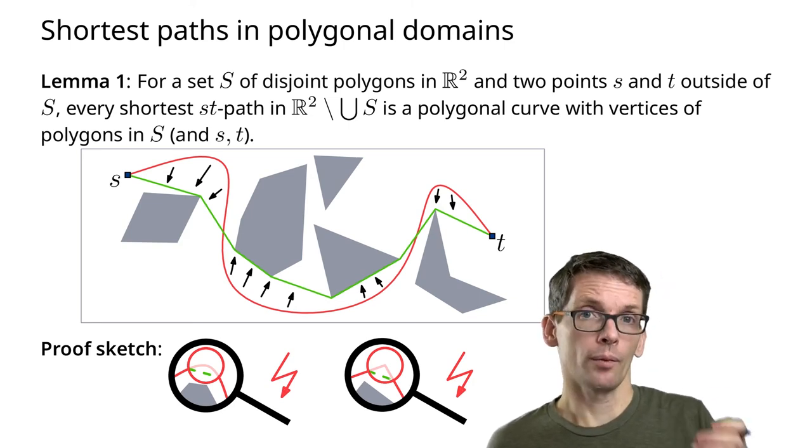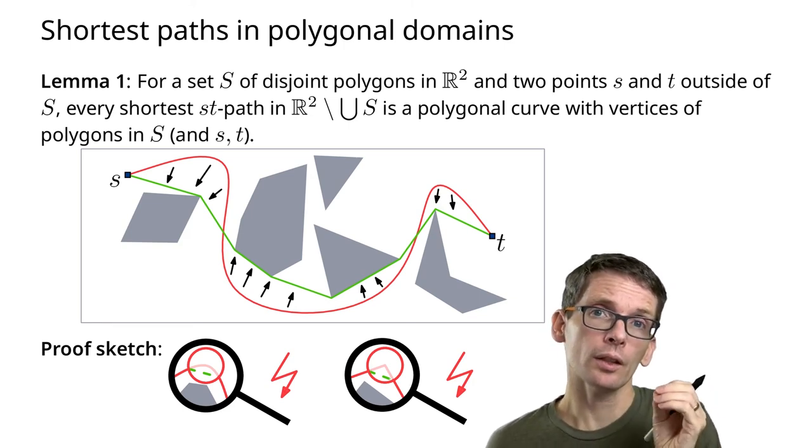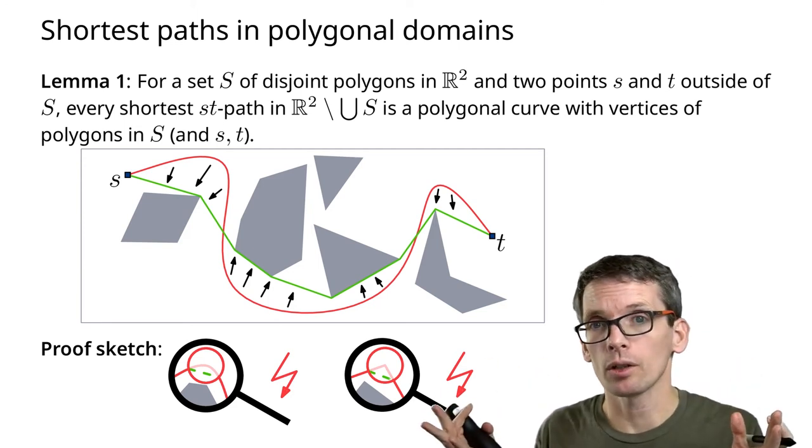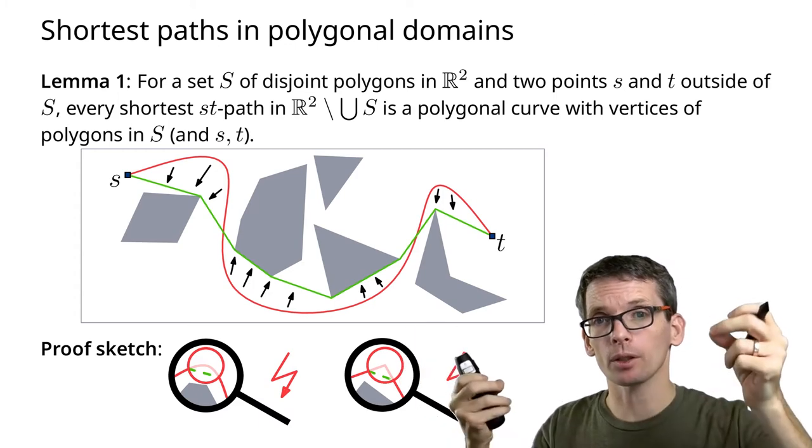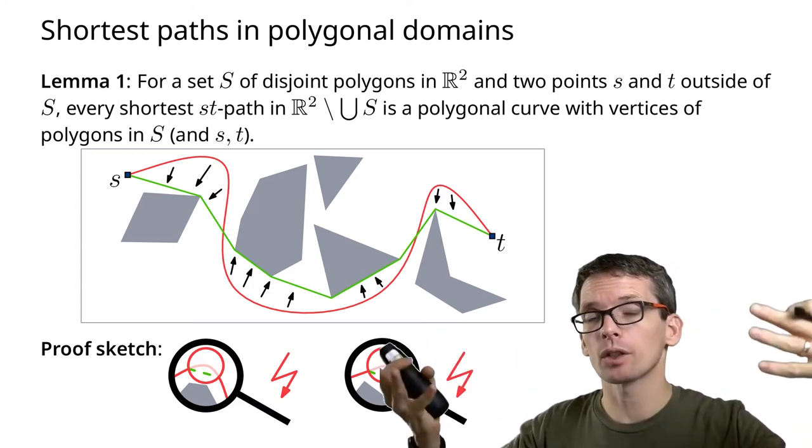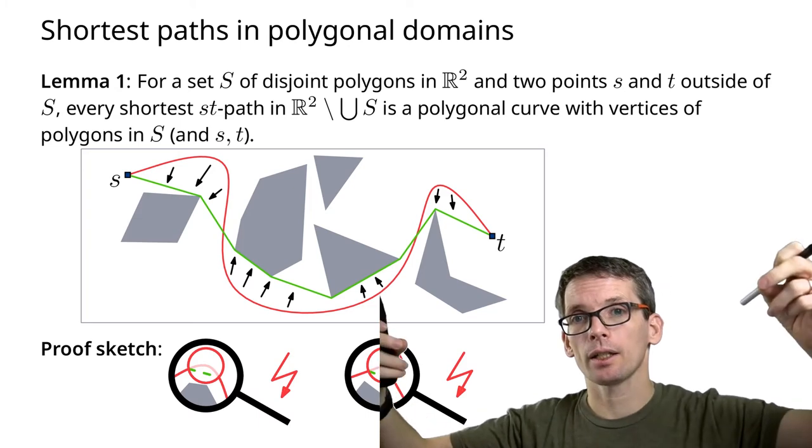With this in mind, what we essentially just need is the connection between vertices of obstacles, because if I have all of these connections, and then also connect s and t, then I know the shortest path will be in that graph.